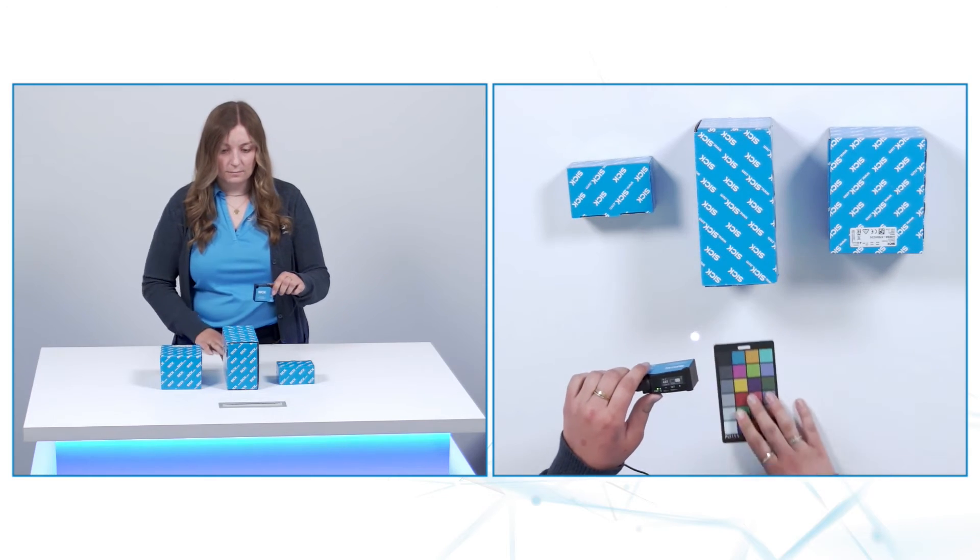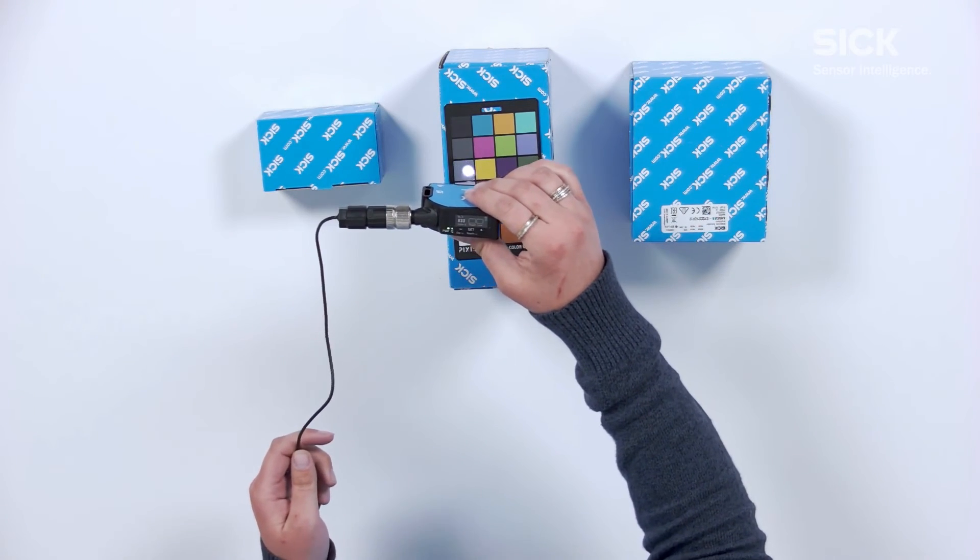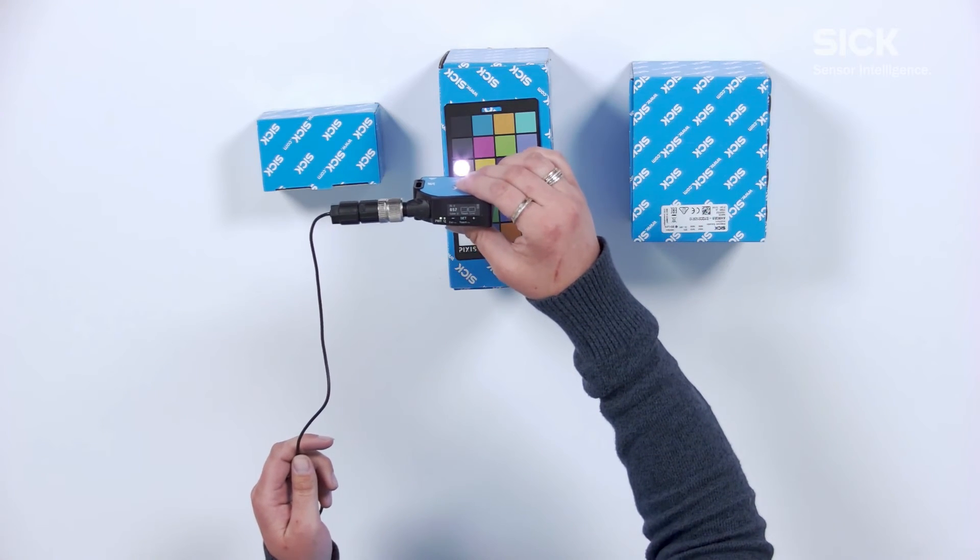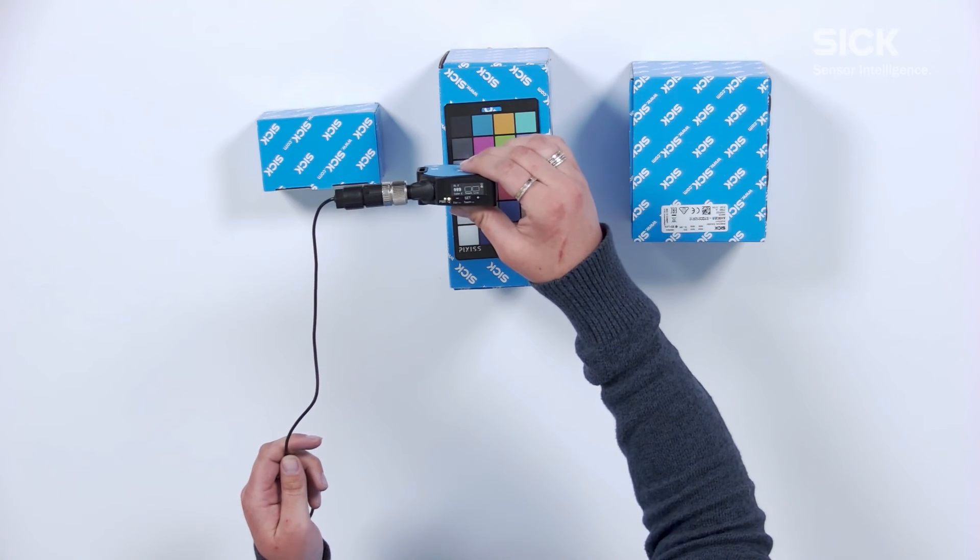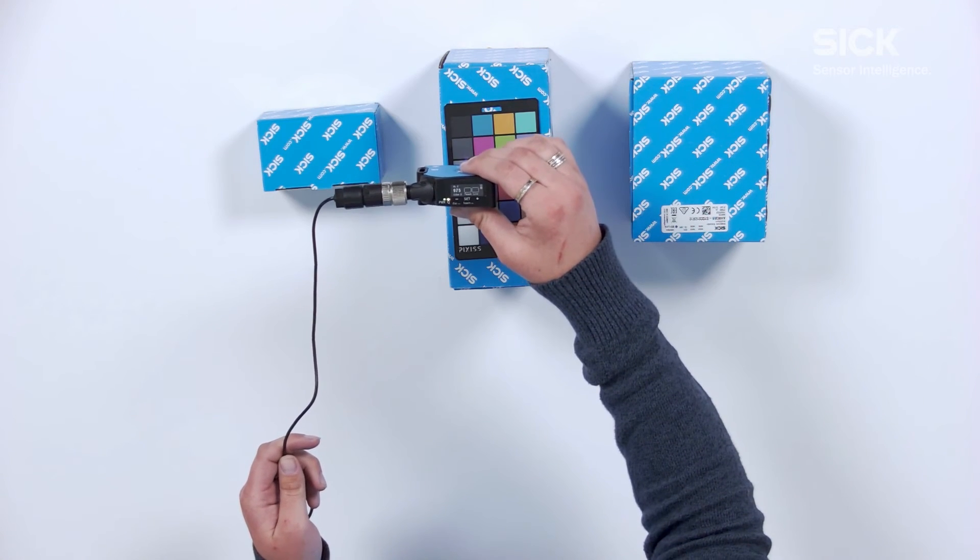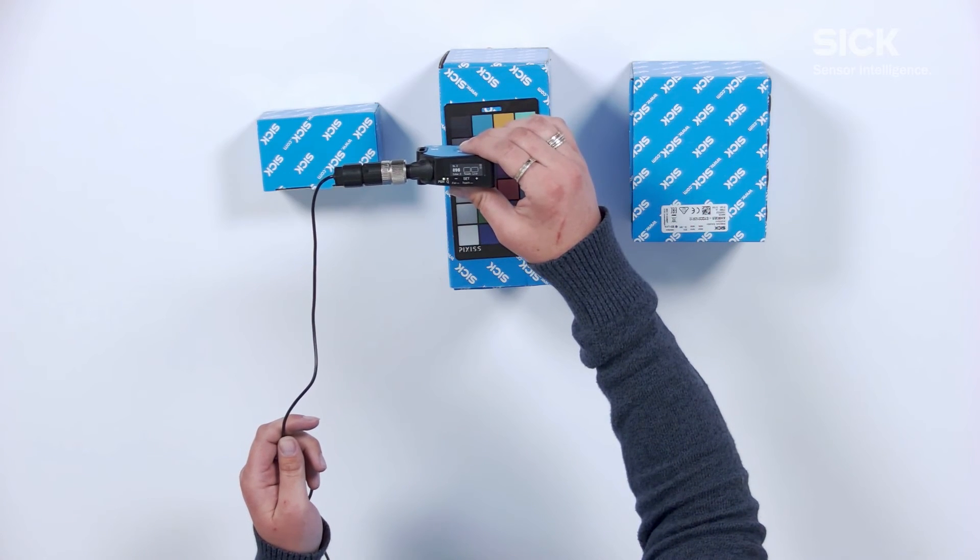On this sheet, I'm going to show you how we can do a single value teach between these two different grays. As you see here, I have a different quality level taught in, and I have it taught to detect this gray versus not detecting this other gray.